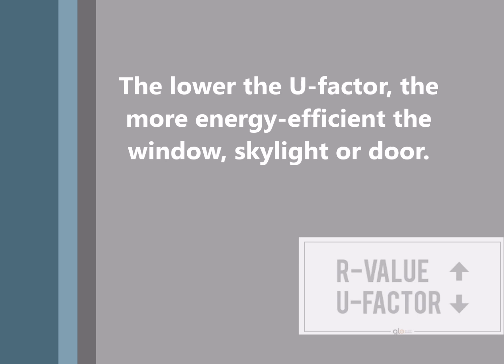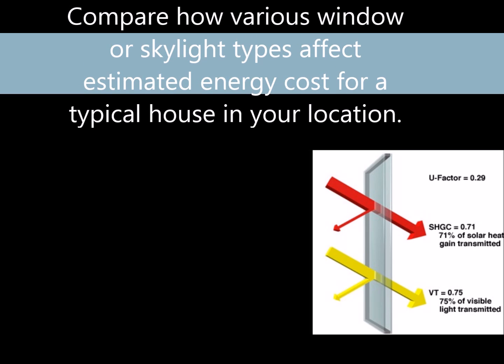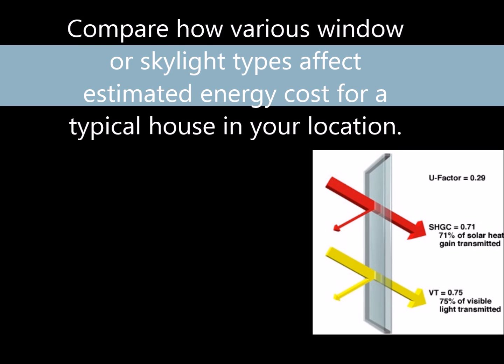The window selection tool will take you through a series of design conditions pertaining to your design and location. It is a step-by-step decision making tool to help determine the most energy efficient window for your home. We use the window selection tool to compare how various window or skylight types will affect estimated energy costs for a typical home in your location. We get general feedback on certain design conditions such as orientation, shading, and window area, and we find manufacturers who offer windows and skylights within the categories shown.